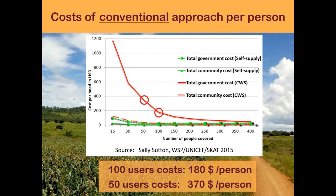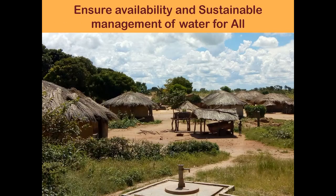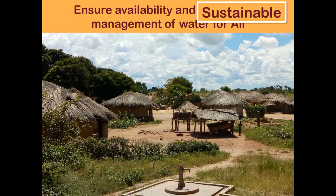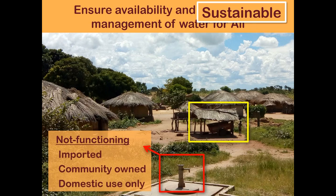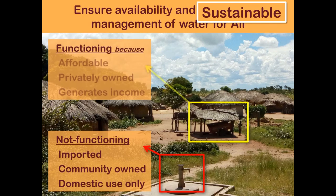I think we have to look at a different approach to reach these people. This is a picture of an average village somewhere in Africa — it could have been taken anywhere. What did we learn from this picture about sustainability? We see a pump, and we also see an ox cart which is nicely put under a shed to be protected from sunlight and rain. Now the pump is not functioning. It's imported from India, it's community owned, and the water should only be used for domestic household use. You can't water your garden with it, you can't feed your cattle with it — the donor has said this is for your household, manage it with the entire community. The ox cart is a different approach, and the ox cart is functioning.